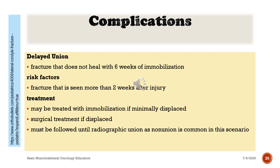Complications — Delayed union: a fracture that does not heal within 6 weeks of immobilization. Risk factors: fracture seen more than 2 weeks after injury. Treatment: may be treated with immobilization if minimally displaced; surgical treatment if displaced. Must be followed until radiographic union, as non-union is common in this scenario.